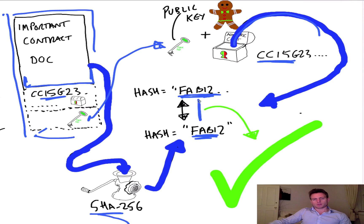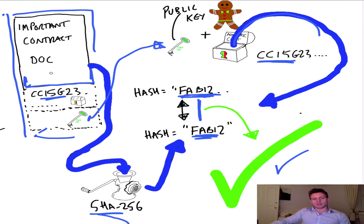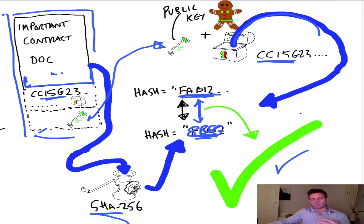If these two hashes match up, then the signature is considered valid. The first implication is that the document received has not been changed in any way. If we go back to the previous slide: if a single letter, or even a single space, had been added to that contract, the hash the Gingerbread Man computes on the received document would be completely different — something like 8bfq — and it would not match the hash from the decrypted signature. Therefore the signature would no longer be valid.